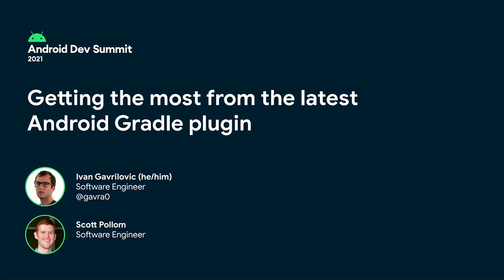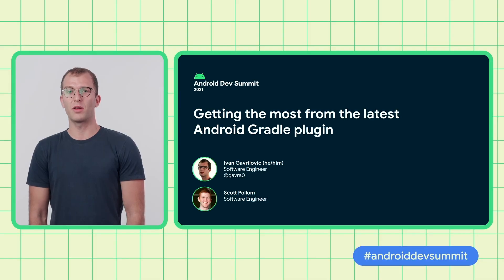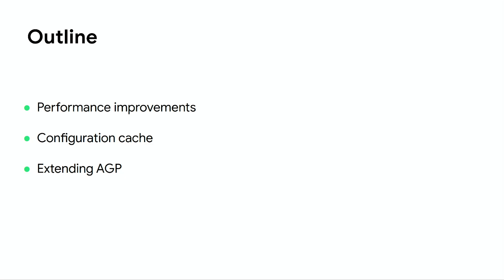Hi, everyone. I'm Ivan, a software engineer on the Android Studio team, and I'm joined today by Scott, who is also an engineer on the Android Studio team. We're going to talk about how you can benefit from the latest changes in Android Gradle Plugin 7.0 in order to improve your build. We'll cover performance improvements in AGP, steps required to benefit from Gradle configuration cache, and how you can extend AGP using the APIs we added in 7.0.